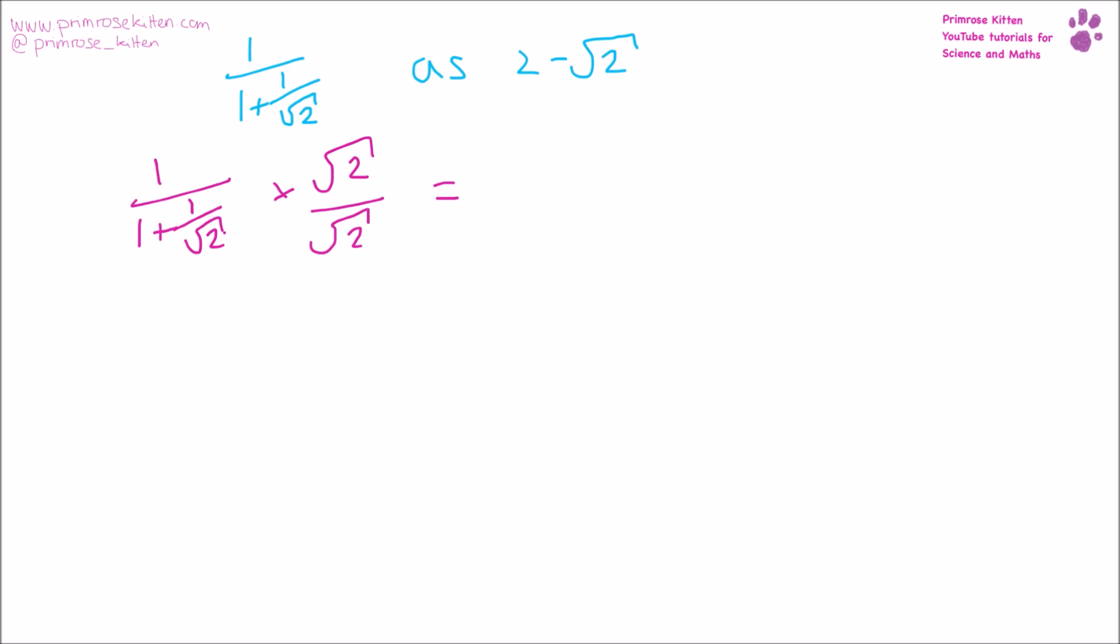This is going to give us the square root of two. One times square root of two is square root of two. One times square root of two is square root of two. Plus, one over square root of two times square root of two is just going to give us one.